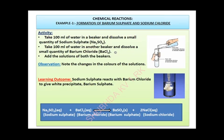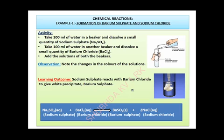The next step is to add the solutions from both beakers together, as represented in the figure. The observation is a change in color of the solution — sodium sulphate reacts with barium chloride to give a white precipitate of barium sulphate, as seen in the figure. As discussed earlier, a change in color indicates a chemical reaction has taken place. A balanced chemical equation is also shown here, which we will discuss later.